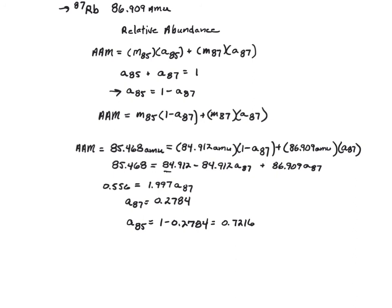The abundance of rubidium-85 is then 1 minus 0.2784, which equals 0.7216. So rubidium-85 accounts for 72.16% of all rubidium, and rubidium-87 accounts for 27.84% of all rubidium. That's how we go forward and backwards with these average atomic mass calculations.